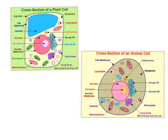Cell is the first definition you'll be writing. This is actually one of the tiny parts that make up all animals and plants. The human body actually contains millions of red blood cells.